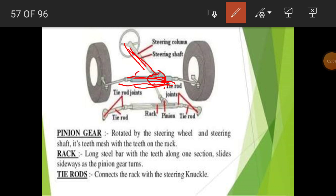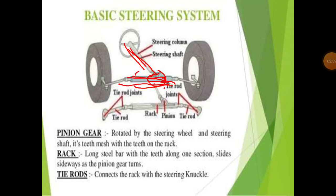The tie rod connects the rack with the steering knuckle. With the help of the tie rod, the rack and the steering knuckles are connected to each other.